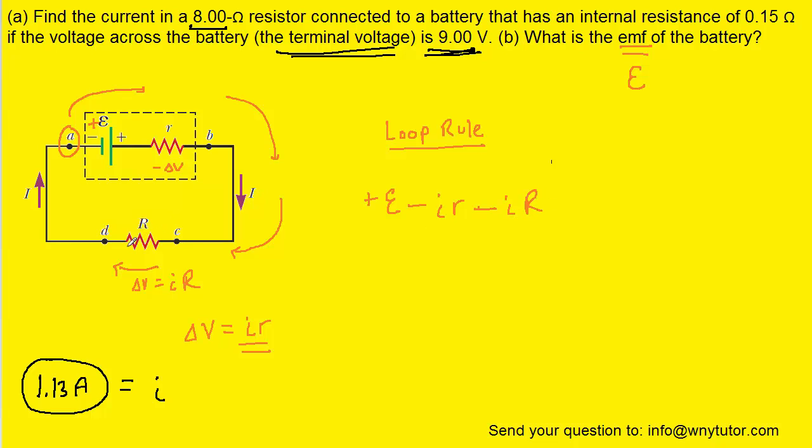Now once we return to where we had started, which was point A, we can set these potential changes equal to zero. Now we're solving for the EMF. And so we can add the i lowercase r and the i uppercase R over to the right-hand side.